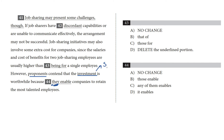Any plural pronoun in the choices is automatically out. So 'they' is out — goodbye choice A. And 'those' in choice B is also a plural pronoun, so choice B is gone too. Choice C: 'any of them enables' — let's plug that back in: 'proponents contend that the investment is worthwhile because any of them enables companies to retain the most talented employees.' Who would 'them' be in this sentence? This sounds awkward, and we're looking for a choice that clearly shows the investment enables companies to retain employees. So choice C is no good.